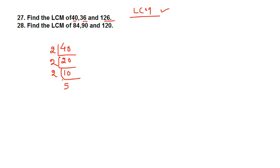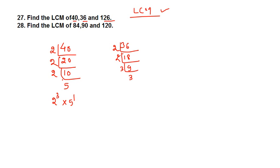The prime factors of 40 are 2 to the power 3 and 5 to the power 1. Next, let us find out the prime factors of 36. The prime factors of 36 are 2 to the power 2 and 3 to the power 2. Now let us find out the prime factors of 126.